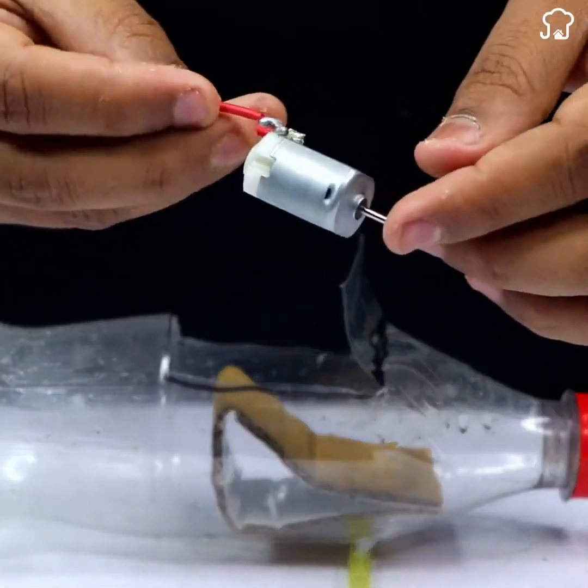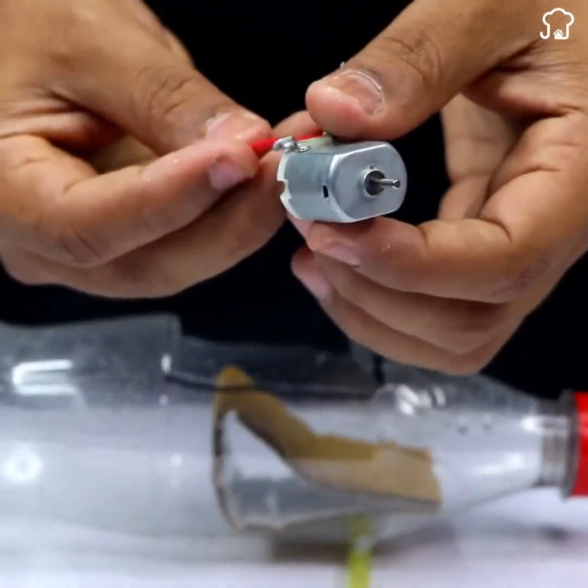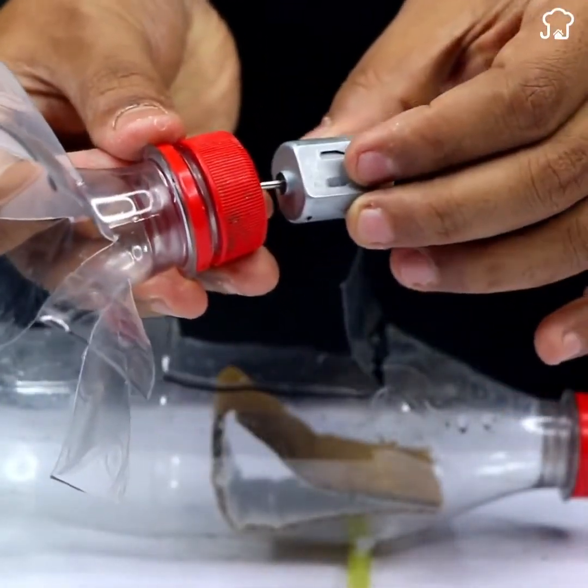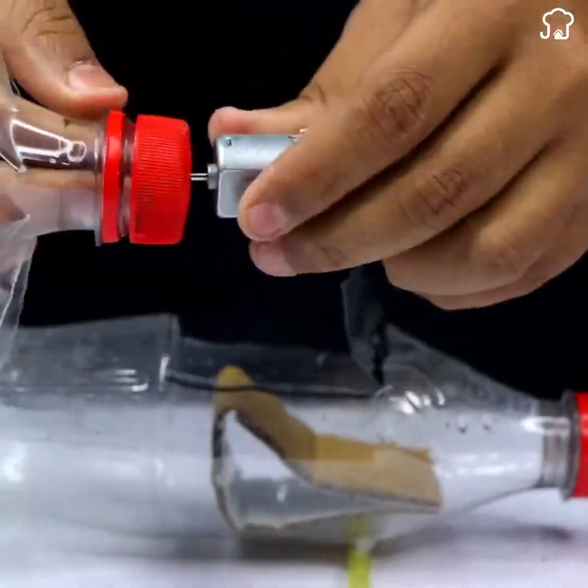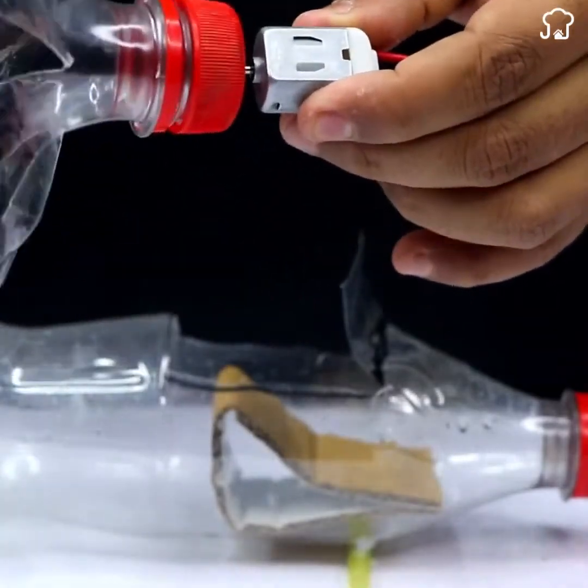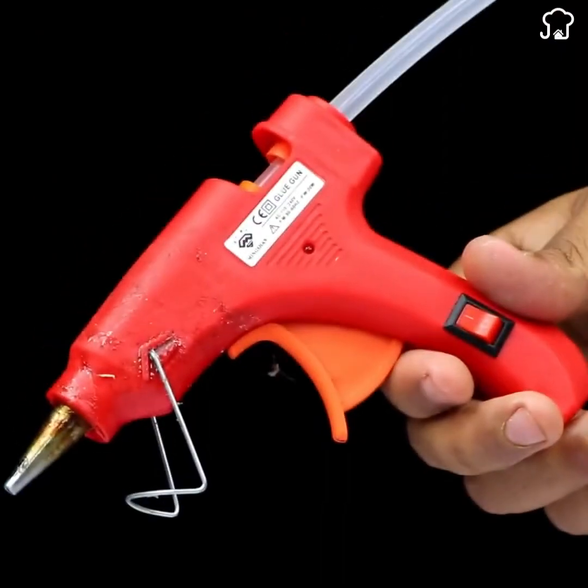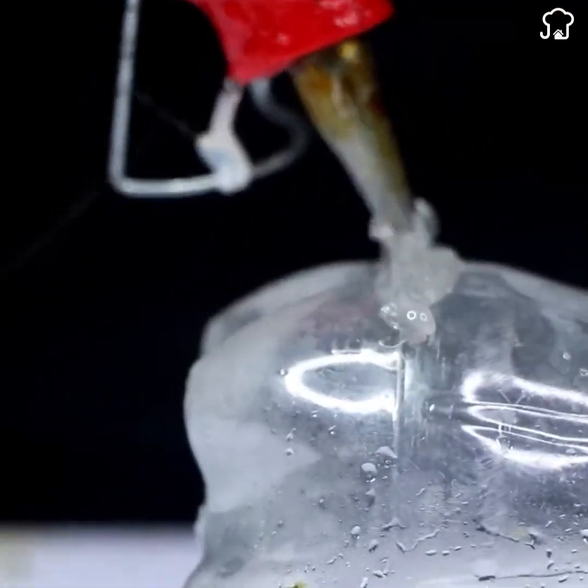We'll use a 6V direct current electronic motor and attach it to the bottle cap we turned into a fan. After applying the glue, we will secure it on the back of the bottle.